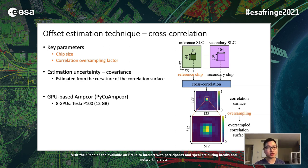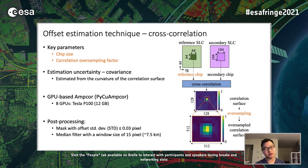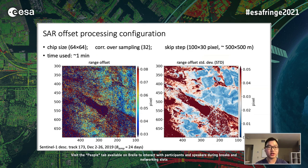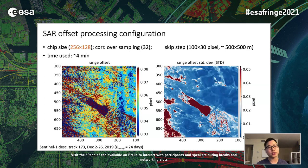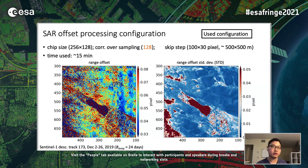We use the GPU-based amplitude cross-correlation (PI-Q-AMP) from the ISCE2 software on a local station with eight GPUs. After cross-correlation, we mask offsets with standard deviation above a threshold and apply a median filter with a window size of around seven kilometers. We choose a chip size of 64 by 64 with an oversampling factor of 32, commonly used in geodesy studies. Increasing the chip size yields smaller standard deviation and cleaner range offset; increasing oversampling further gives a more finely sampled offset field.